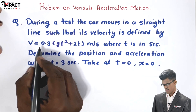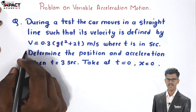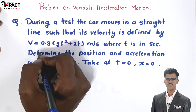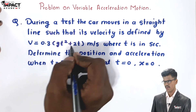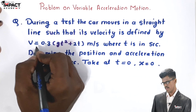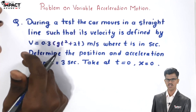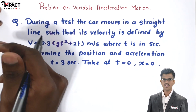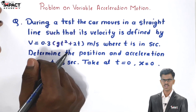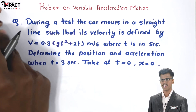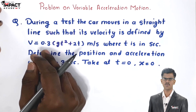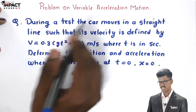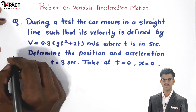Here velocity is a function of t — if time changes, velocity keeps on changing. If velocity keeps on changing with respect to time, the acceleration of the particle also keeps on changing with respect to time. So it is a variable acceleration motion problem.